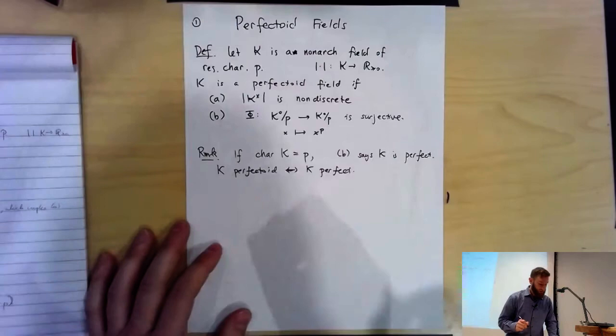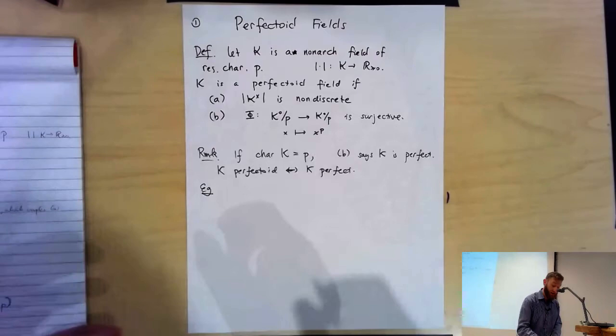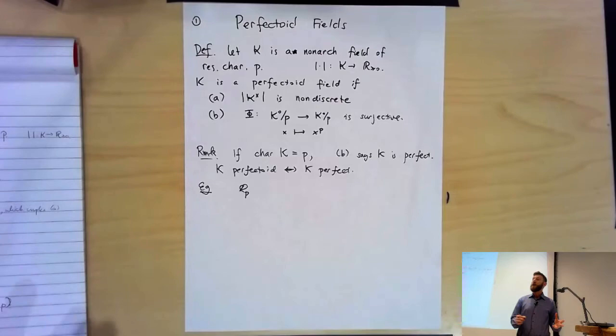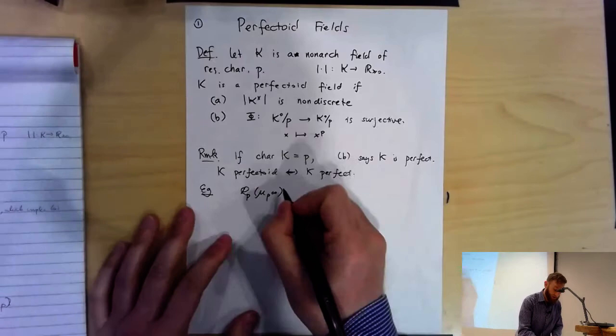What are some examples of perfectoid fields? We saw some of them in Peter's introductory lecture. The most basic examples are the following two P-adic fields. You can take Q_P, but make it a lot bigger by passing to a very ramified extension — for instance, by adjoining all P-power roots of unity, and then completing this to make it a non-Archimedean field.